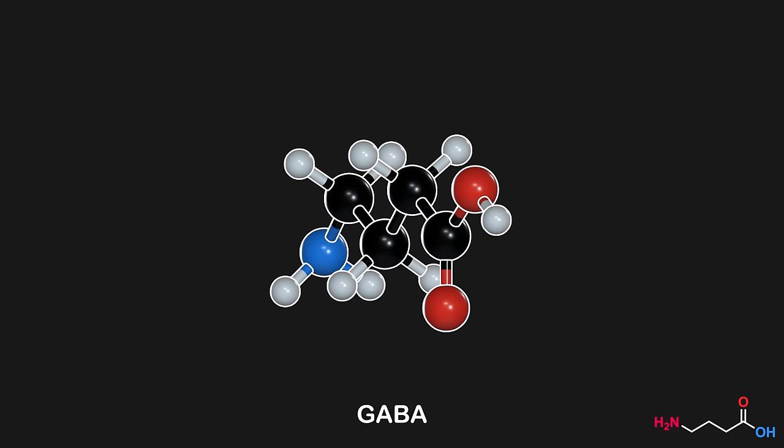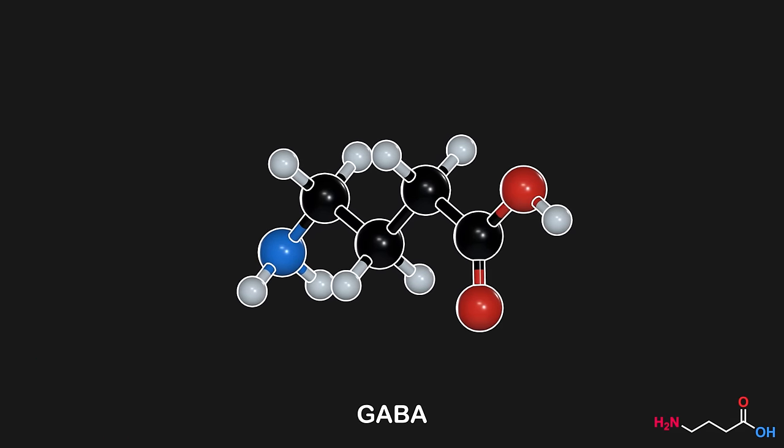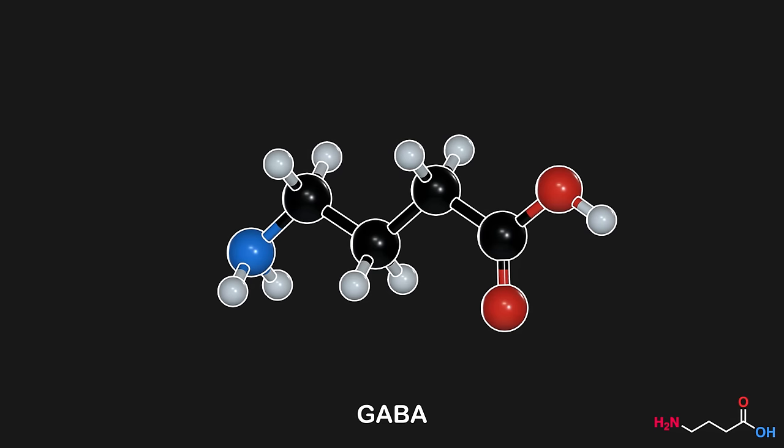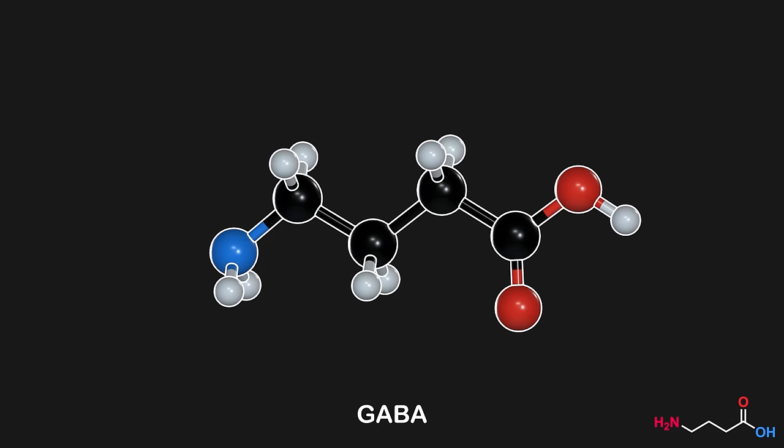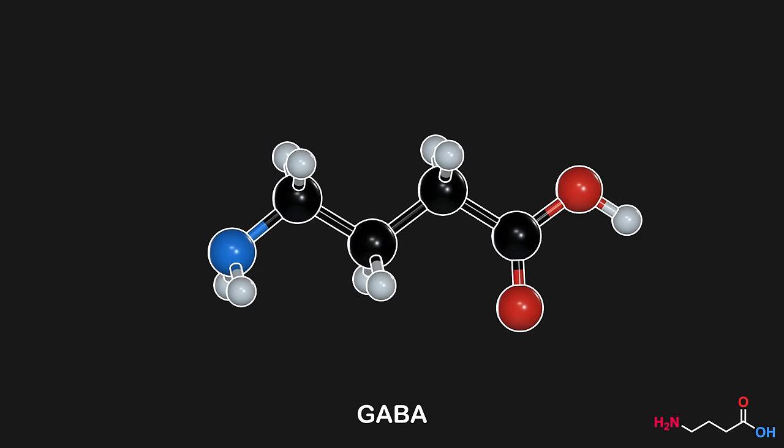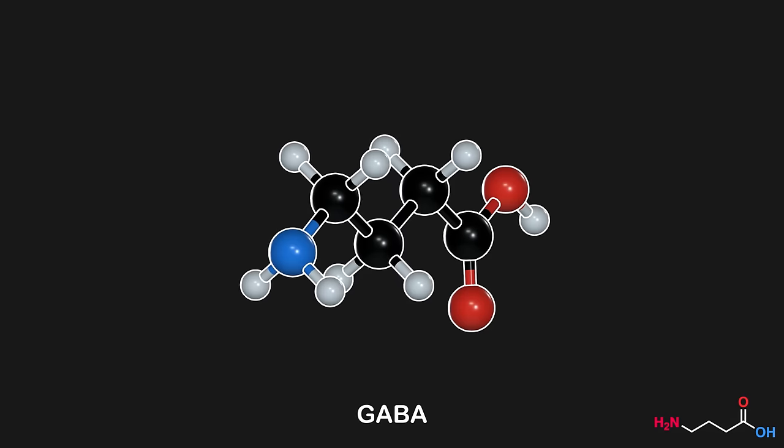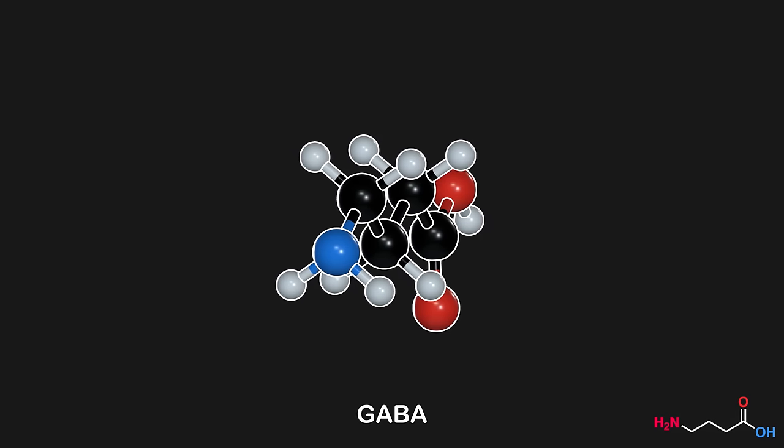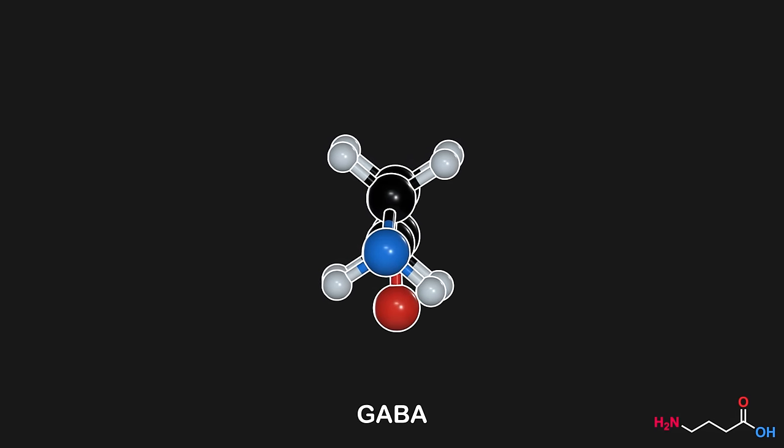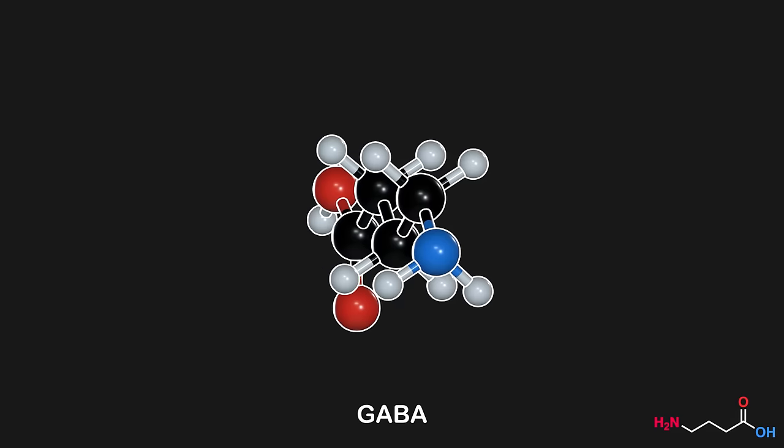When it comes to GABA receptors, we're dealing with two main types, GABA-A and GABA-B. GABA-A receptors are ionotropic, which means they provide a direct passage for ions when activated, typically causing an immediate response. In contrast, GABA-B receptors are metabotropic. They indirectly open ion channels through a sequence of internal cellular events, leading to effects that might be slower to onset, but longer lasting.